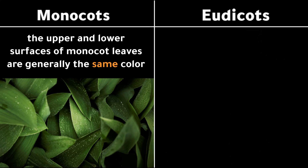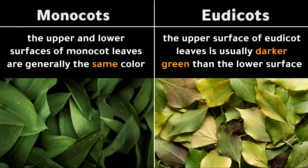The upper and lower surfaces of monocot leaves are generally the same color. The upper surface of eudicot leaves is usually darker green than the lower surface.